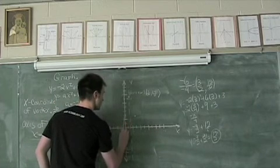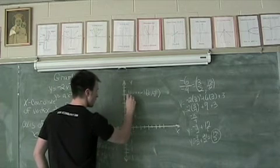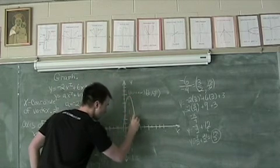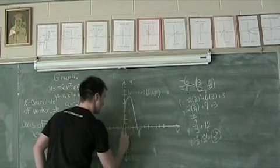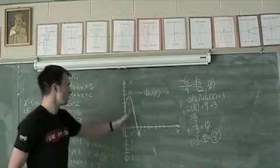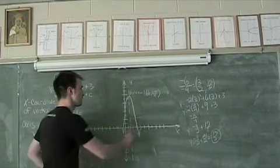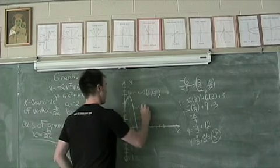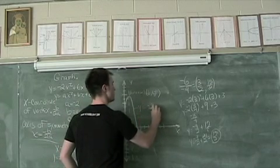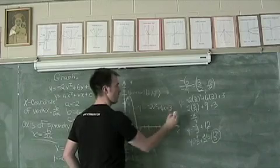Now all I have to do is connect my five points using a smooth line and making sure that if I use my vertical line test, this whole thing is a function. And there we have it. This is the graph. Y equals negative two x squared plus six x plus three. Thank you.